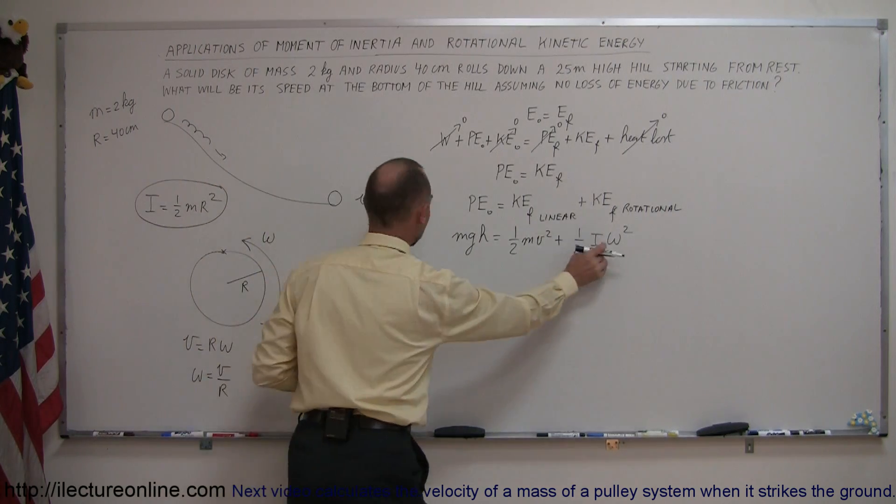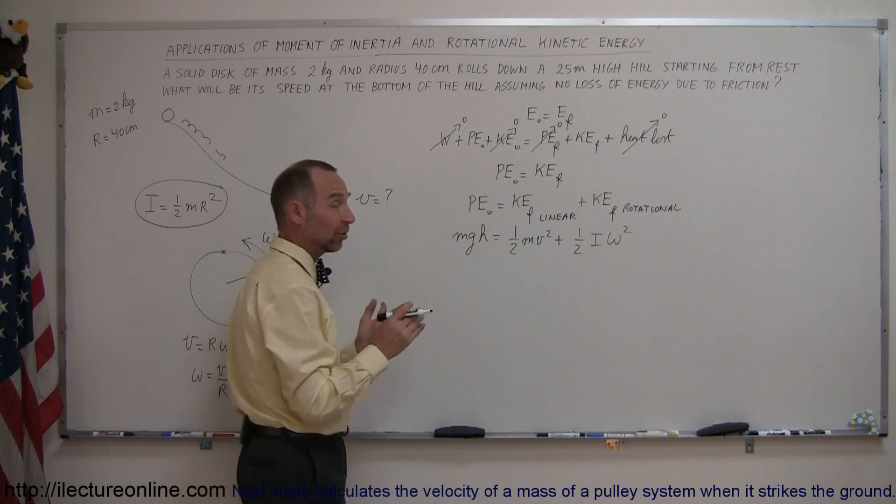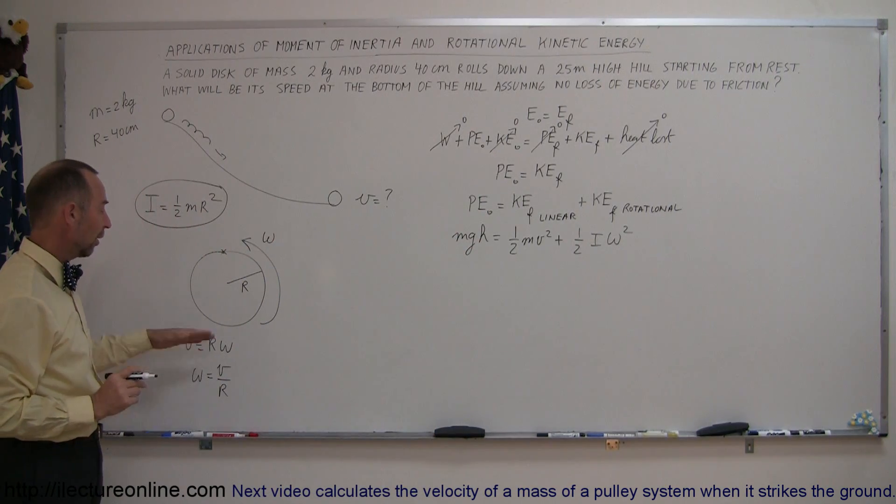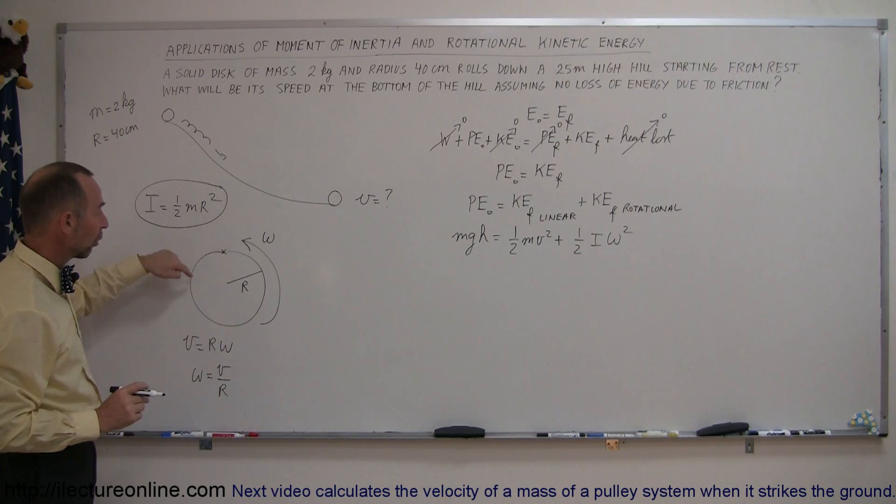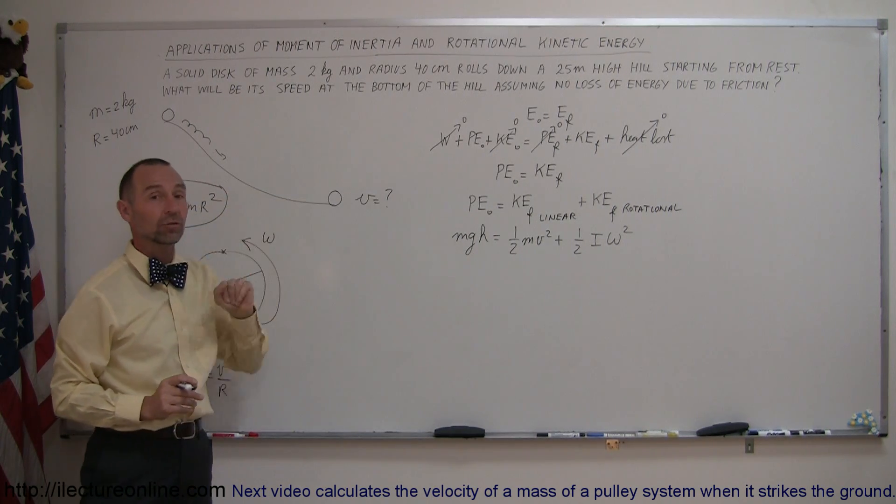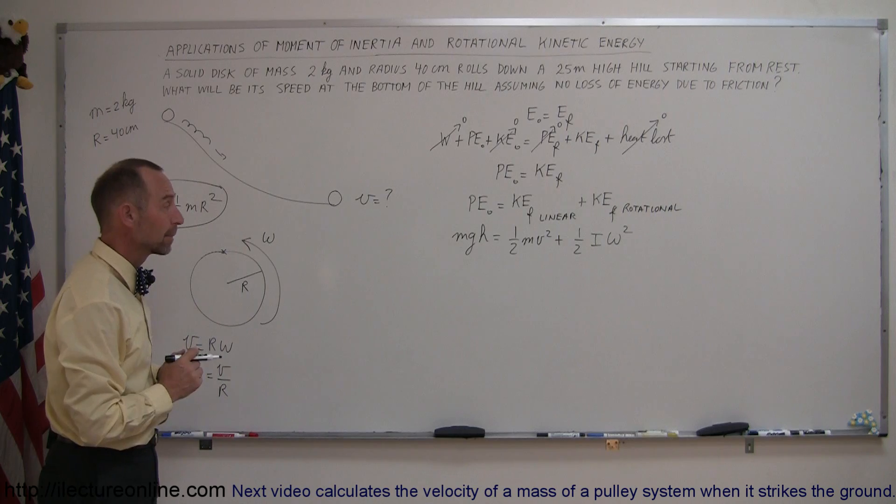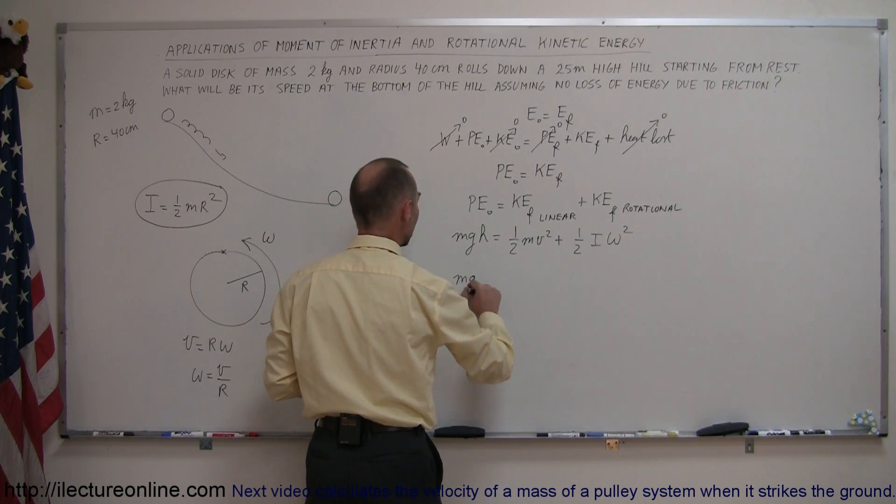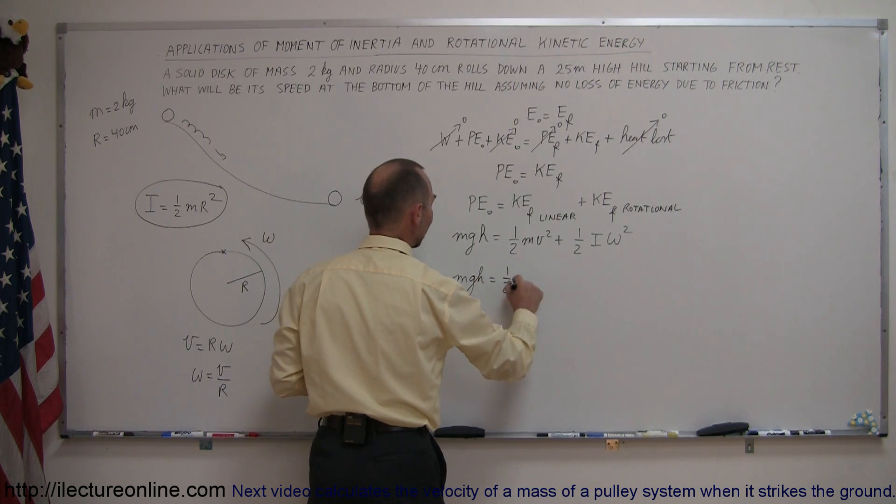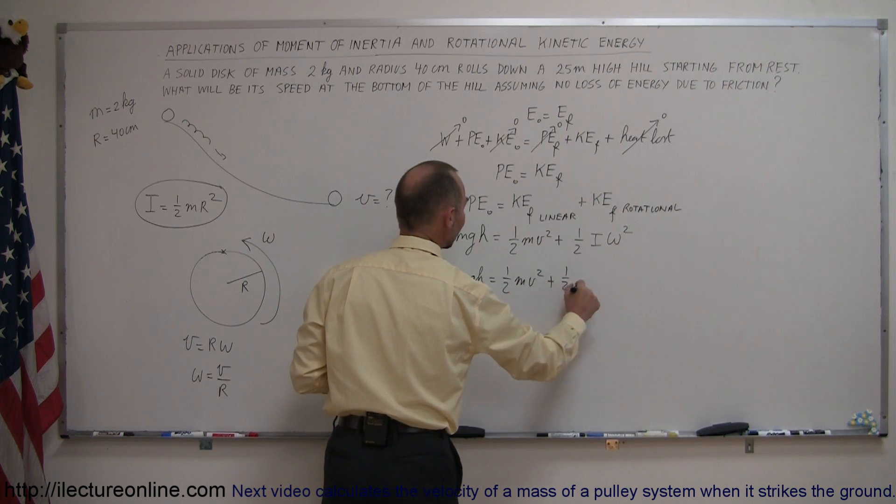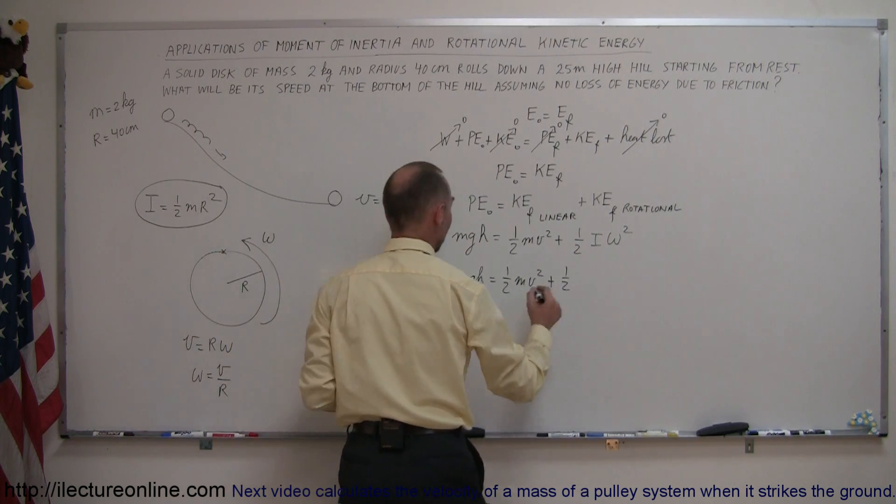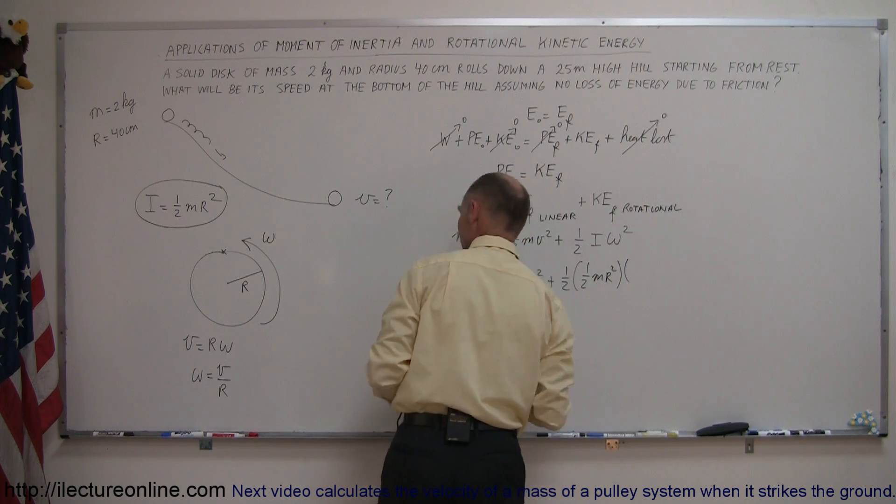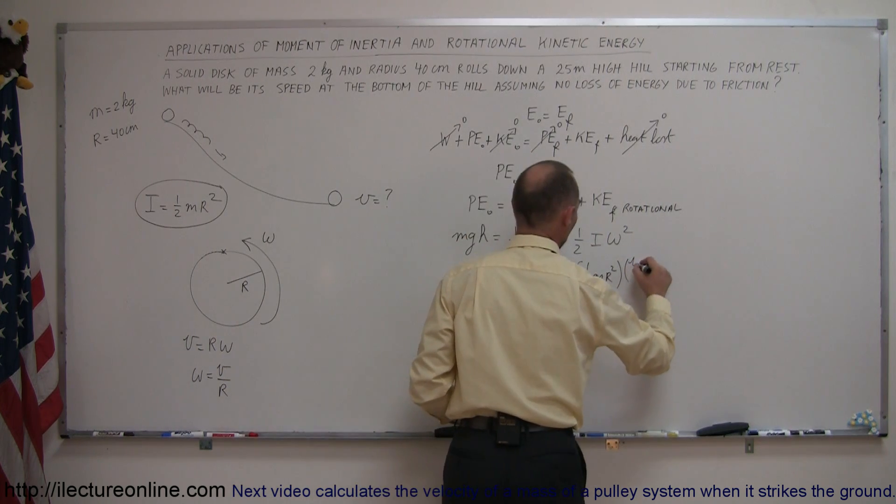So we're going to replace i by one-half m r squared, because it's a solid disk, and we're going to replace omega by the tangential velocity over r. Remember the tangential velocity of a rolling wheel will actually be equal to its translational velocity, or linear velocity. So that will be the same as this v right here. Plugging those things in, we get mgh equals one-half mv squared plus one-half times i, and i is one-half m r squared. And then omega is v over r, and we have to square that as well.